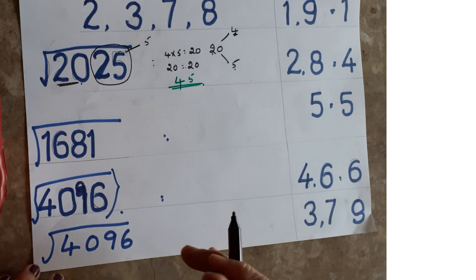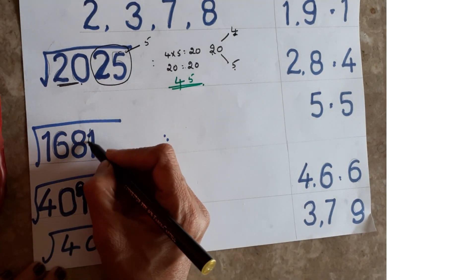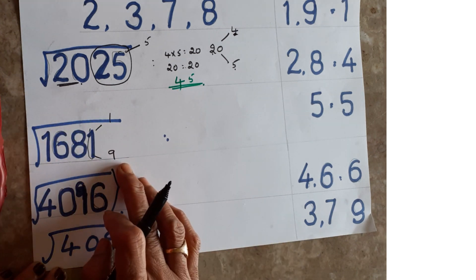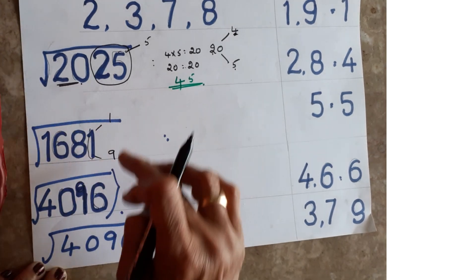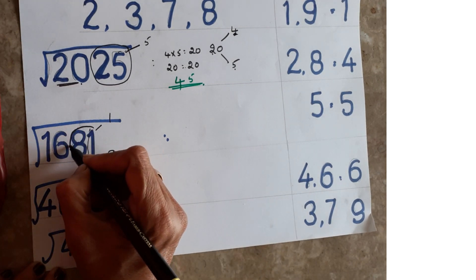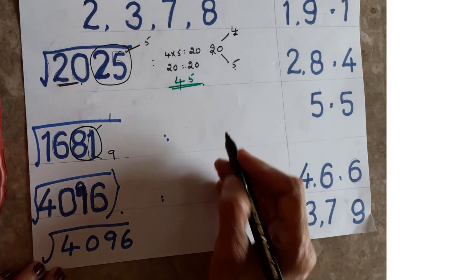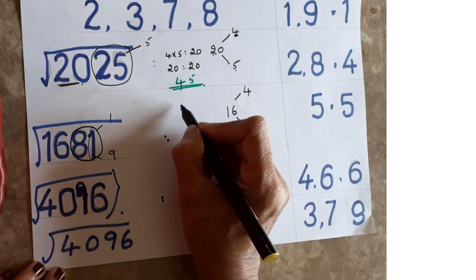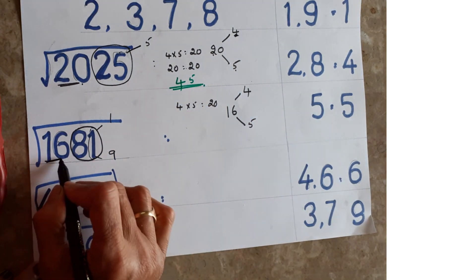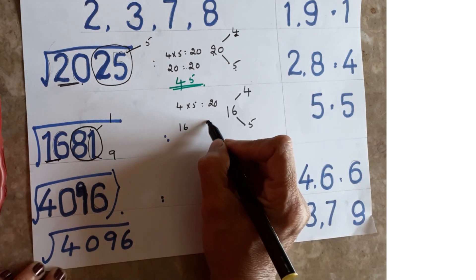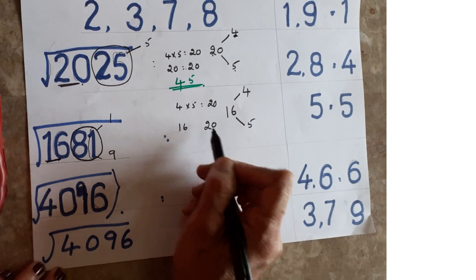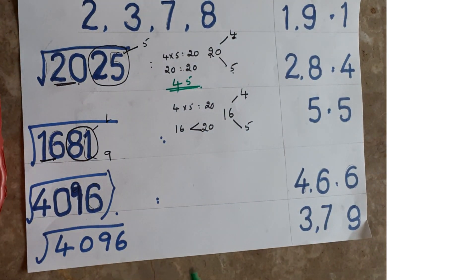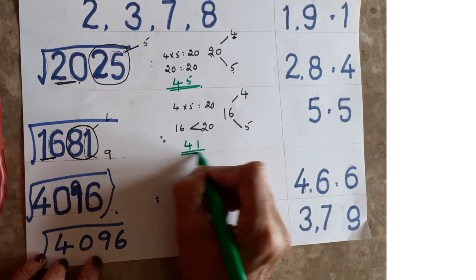Square root of 1681: units place is 1. One means you will get either 1 or 9 in the units place — since one ones are 1, and nine nines are 81. Eliminate the last two digits — remaining is 16. Nearest squares: four fours are 16, five fives are 25. Multiply 4 times 5 = 20. Base value is 16. Since 16 is less than 20, take the before number, which is 4. Units place gives 1. Answer is 41.